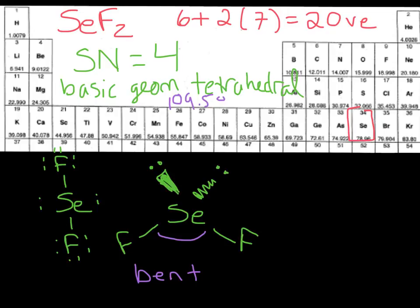But for us, we have two lone pairs on the selenium, and remember, lone pairs have sharp elbows, so they're going to squeeze those two fluorines closer together. And so, we're just going to say that it's less than 109.5 degrees. With two lone pairs, it's squeezed together even more than it would be with one lone pair on the central atom.